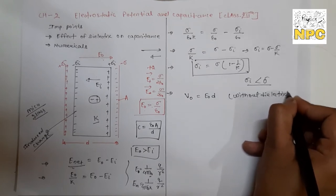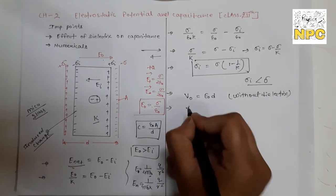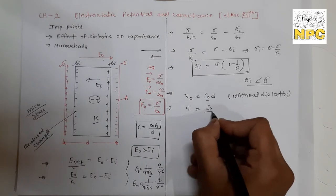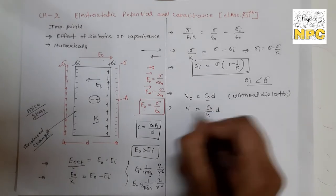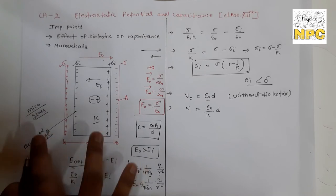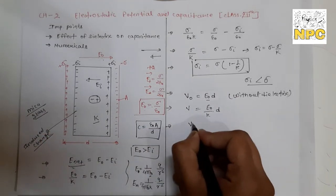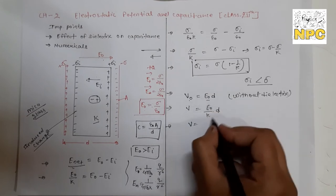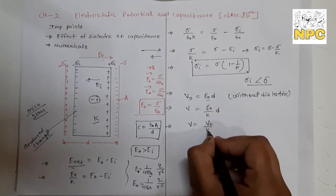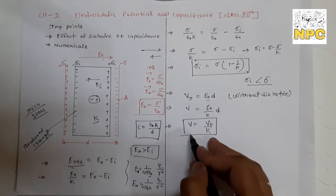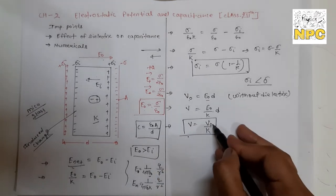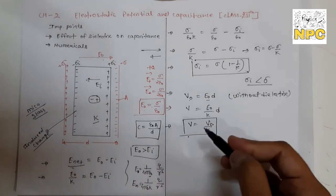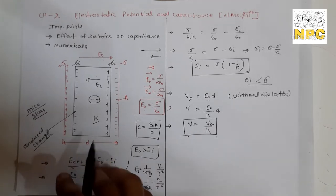Now when we insert the dielectric, E₀ becomes E₀/K. So V = (E₀/K) × D. Since E₀ × D = V₀, we get V = V₀/K. It is clear from this equation that the potential also decreases K times when dielectric is inserted. The distance between the plates remains the same.